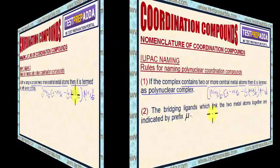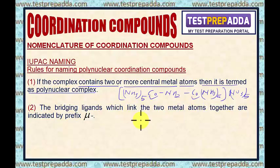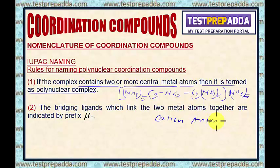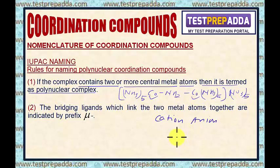We already know that while writing the name of coordination compounds, first we write the name of the cation, then we write the name of the anion. Depending upon whether the cationic part or anionic part is complex, we write the name accordingly. While writing the name of the complex part, first we write the names of the ligands alphabetically, then the name of the central atom, then the oxidation state in Roman numerals inside the bracket.